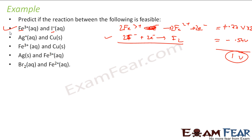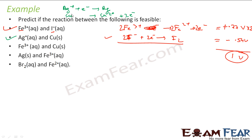Now let's take the second example: Ag⁺ and Cu. The reaction will be: Ag⁺ plus one electron gives Ag, and Cu becomes Cu²⁺ releasing 2 electrons. So we multiply the silver half-reaction by 2 to balance the electrons.